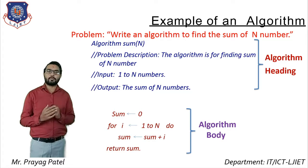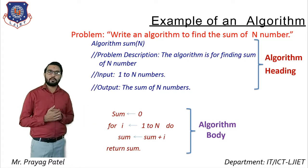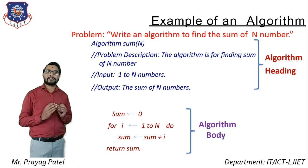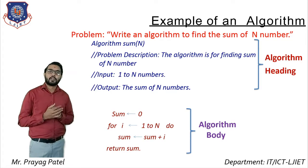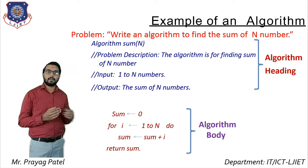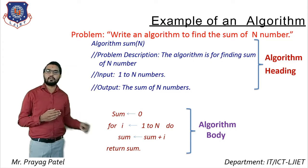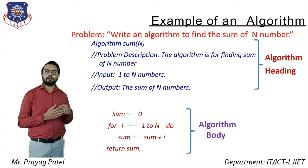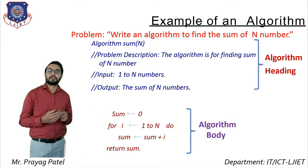Now the algorithm body part: initially sum ← 0, assigning the value 0 to the sum variable (using the left arrow for assignment). Then, for i = 1 to n, sum ← sum + i, which performs the addition of n numbers. The last step is return sum.